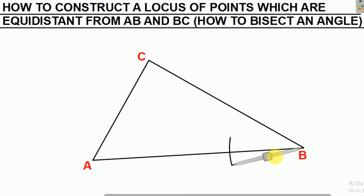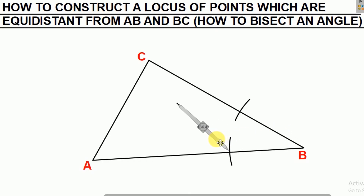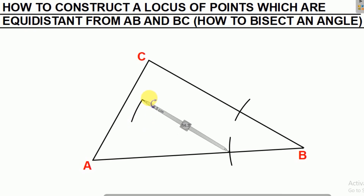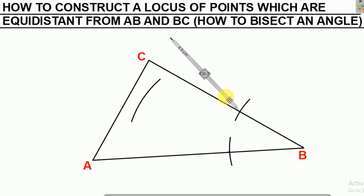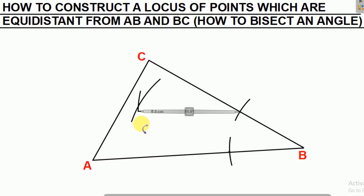You don't have to change the radius. Using the same radius, construct another arc on line BC. After that, place the compass on the arc drawn on line AB, then increase the radius from the initial one and construct an arc. Without changing this new radius, place the compass on the arc on line BC and draw an arc that cuts the first arc.